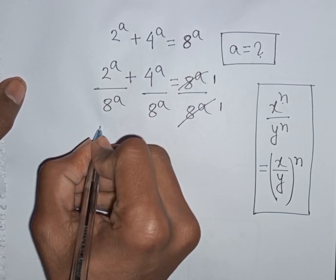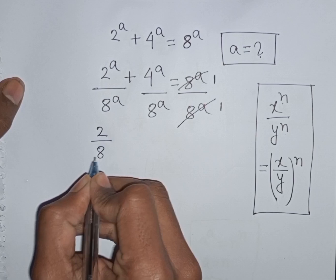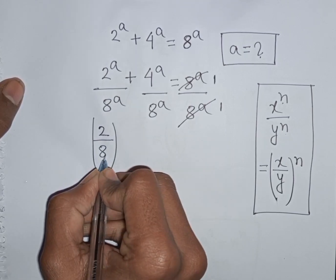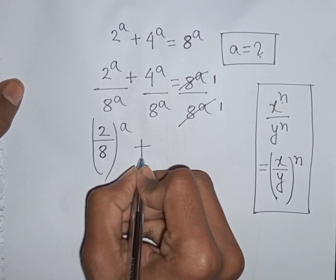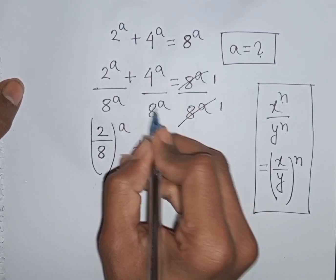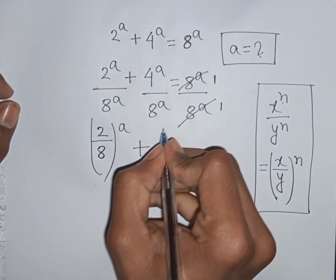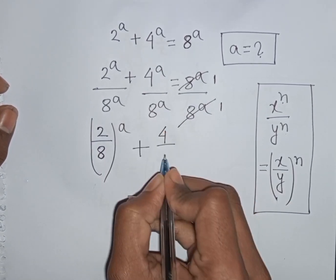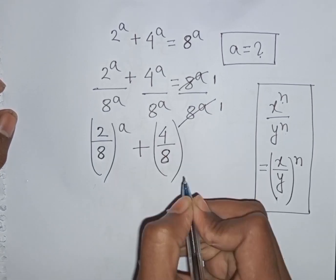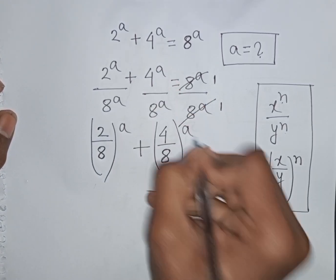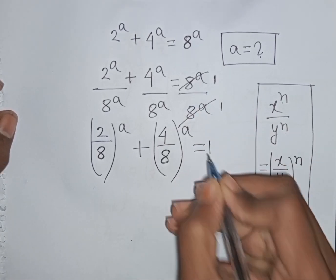According to this exponential rule, we can write (2/8)^a plus (4/8)^a is equal to 1 divided by 1, which means it will be 1.